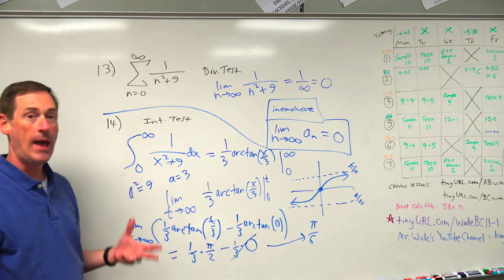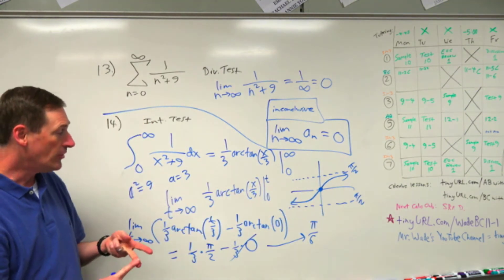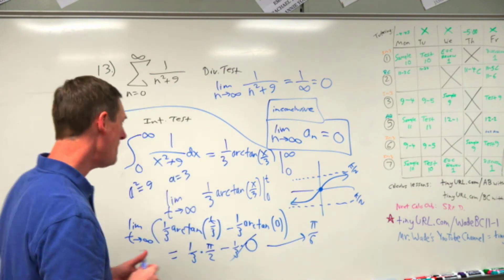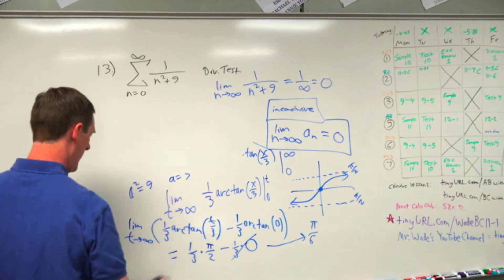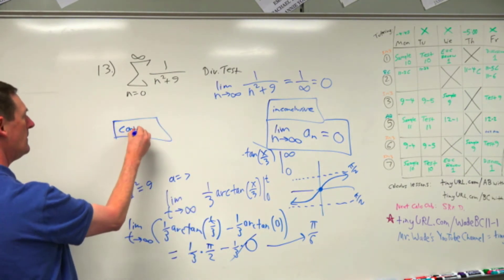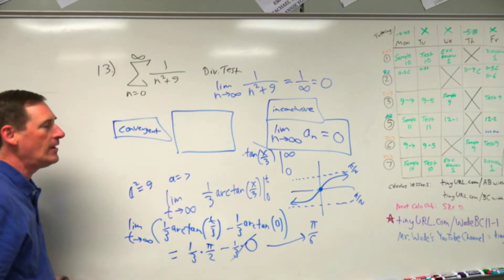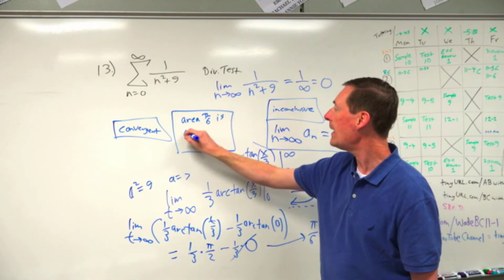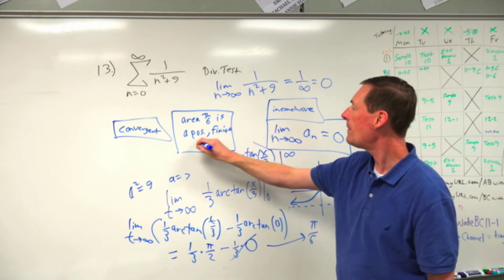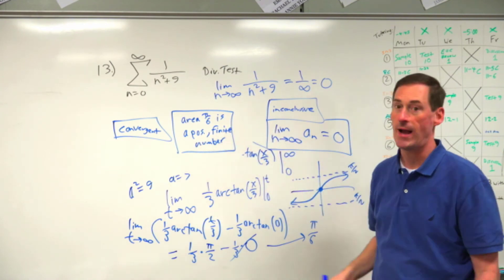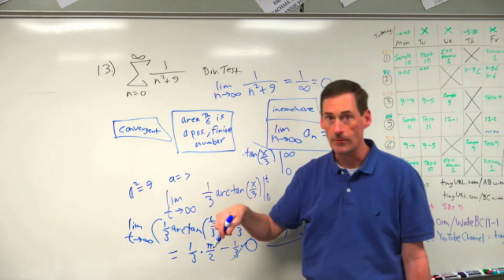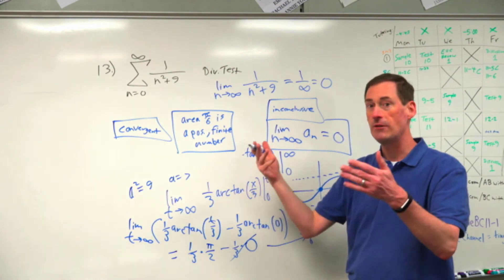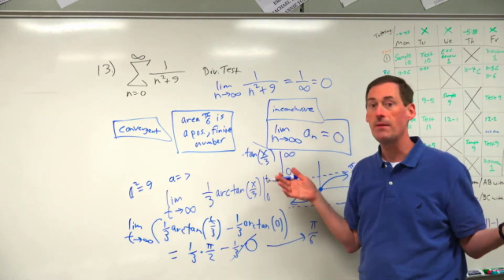So one-third stays, and this part goes to pi over two. Minus one-third times arc tangent of zero — that's zero at the origin — so the second term drops out. You end up with pi over six. If the integral test gives you a positive finite number, that means convergence. In the first box put 'convergent'; in the second box, because the area pi over six is a positive, finite number.